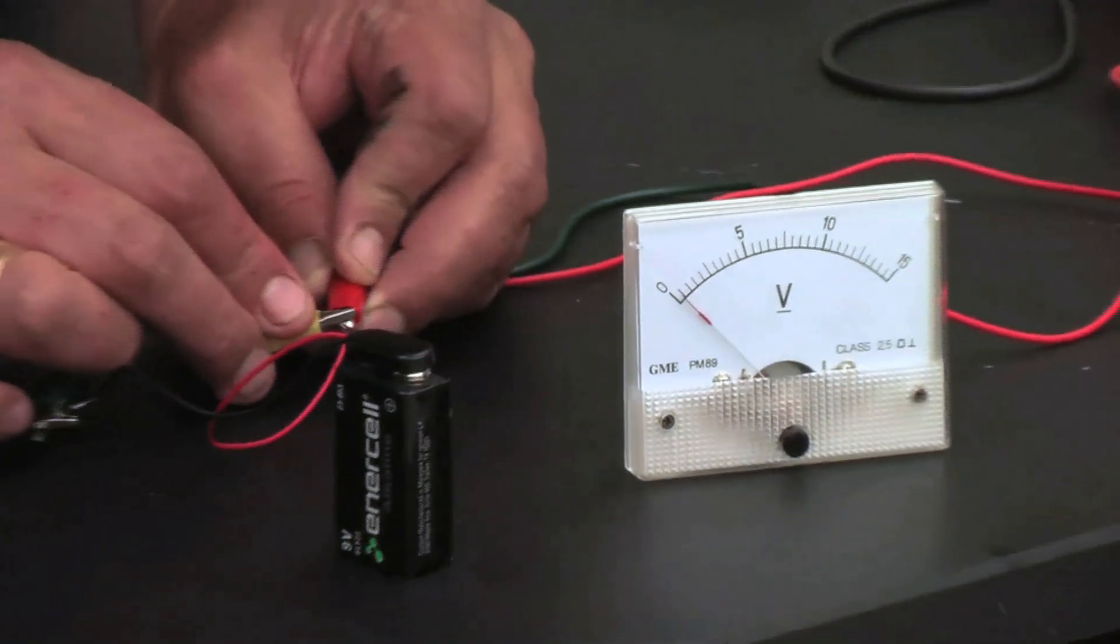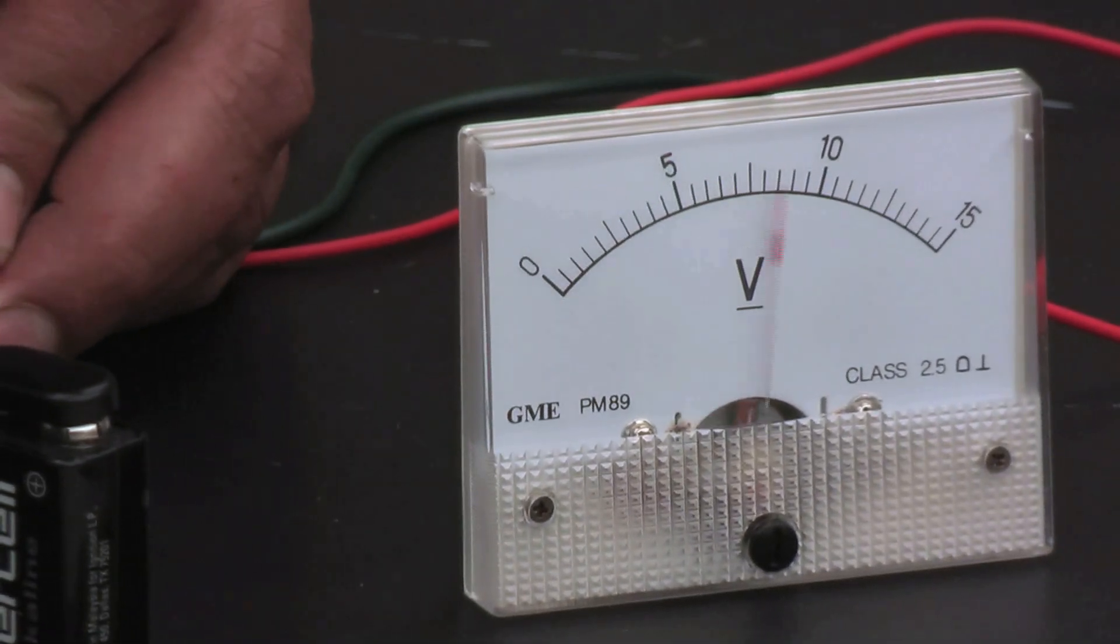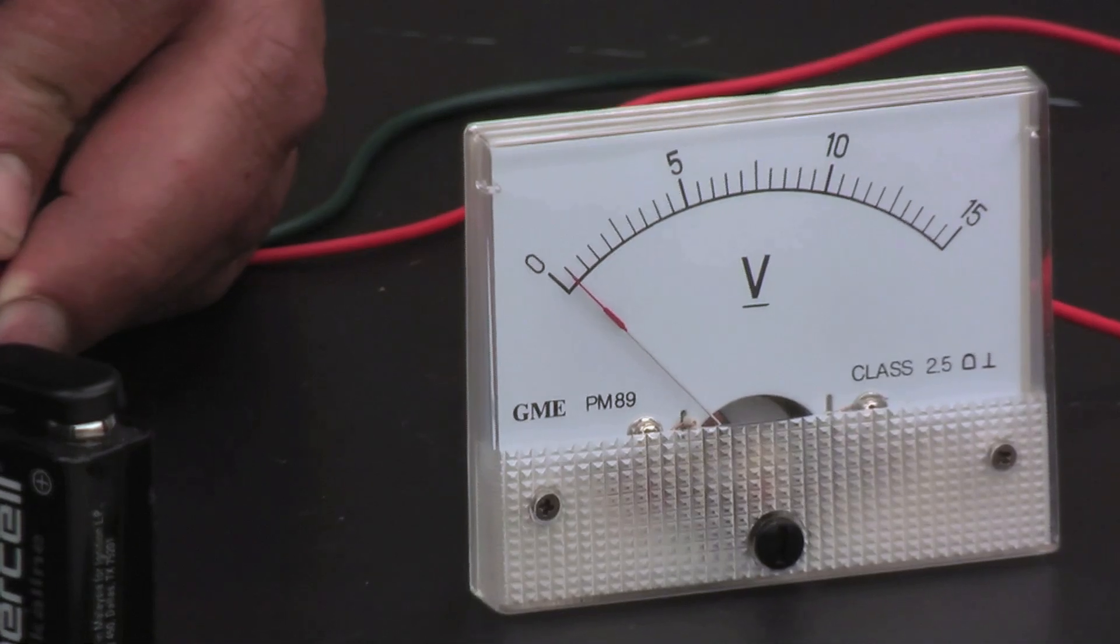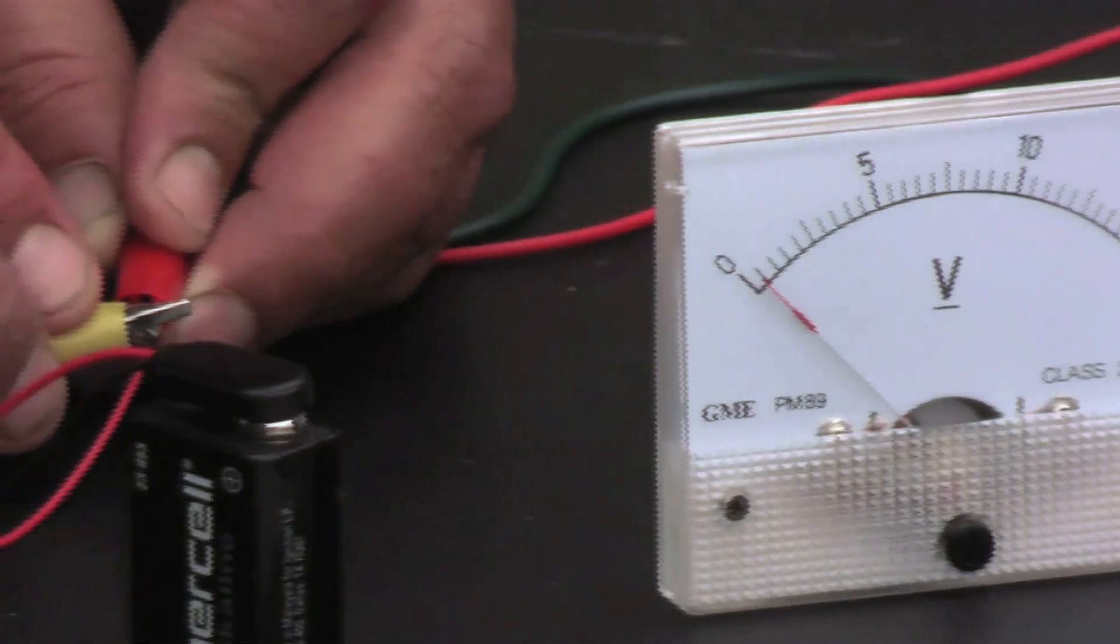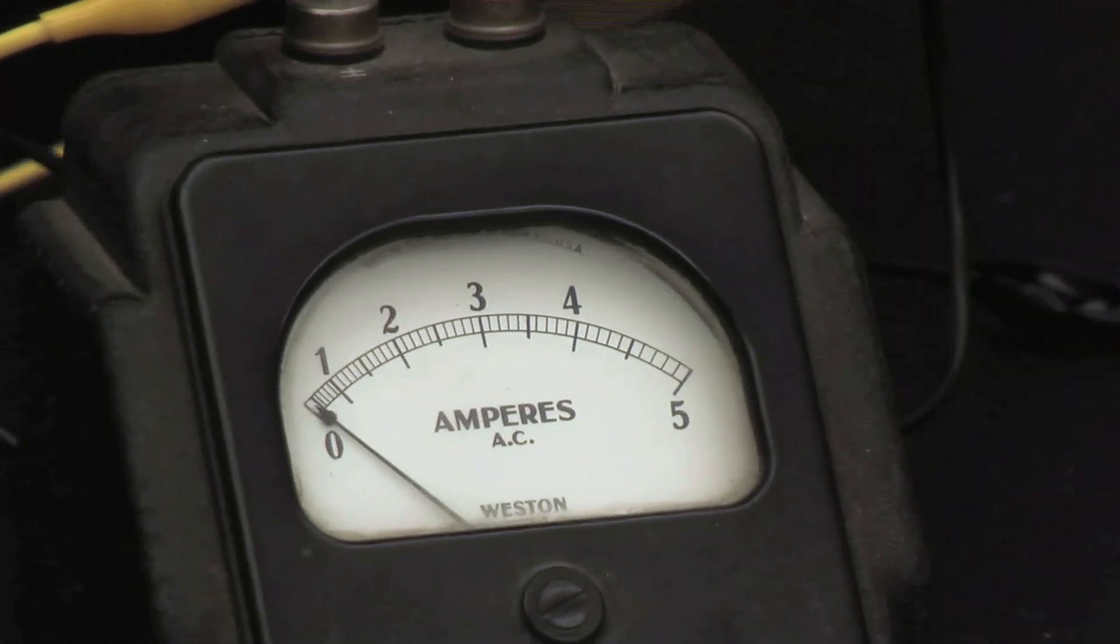Well, notice the voltage of my battery has dropped all the way down. It goes from 9 volts all the way down to 1 volt, and the current meter is reading about 2 amps. Very interesting.